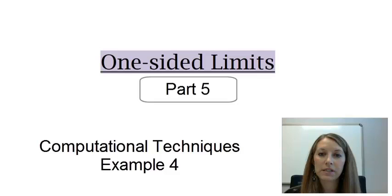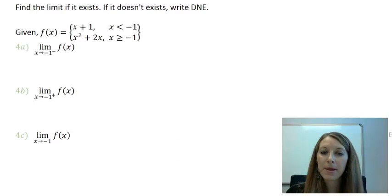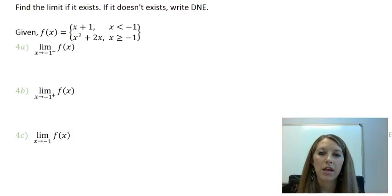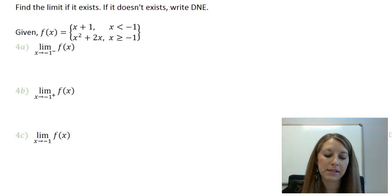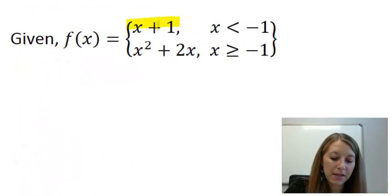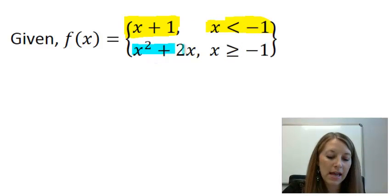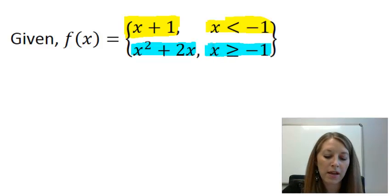Continuing on with computational techniques of one-sided limits, I have another example to show you here. My function is a piecewise function. To review: piecewise functions have two or more separate pieces. In this example, we have just two pieces. The first piece is defined when x is less than negative 1, and the second piece is defined when x is greater than negative 1.